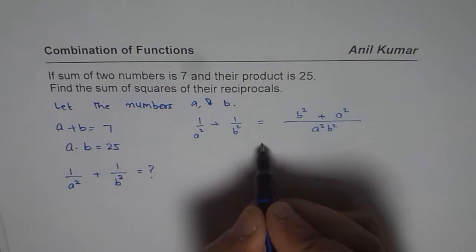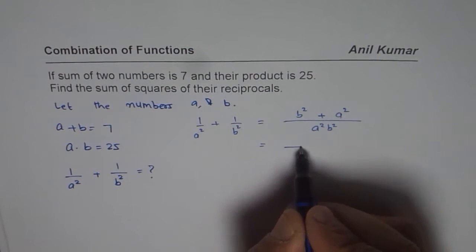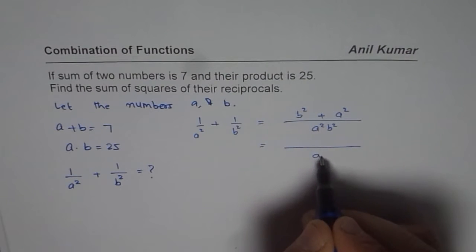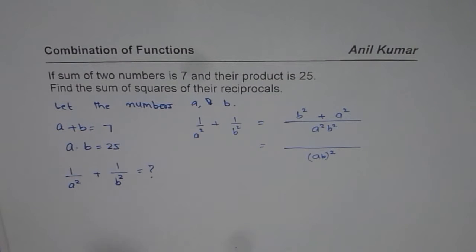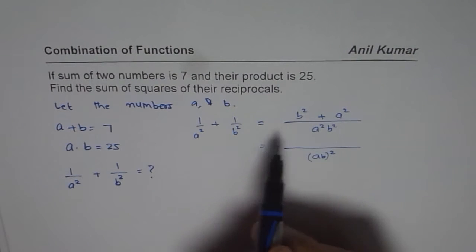Now I can write AB whole squared in the denominator. We know what the product is, so we know this value. How do I simplify this?